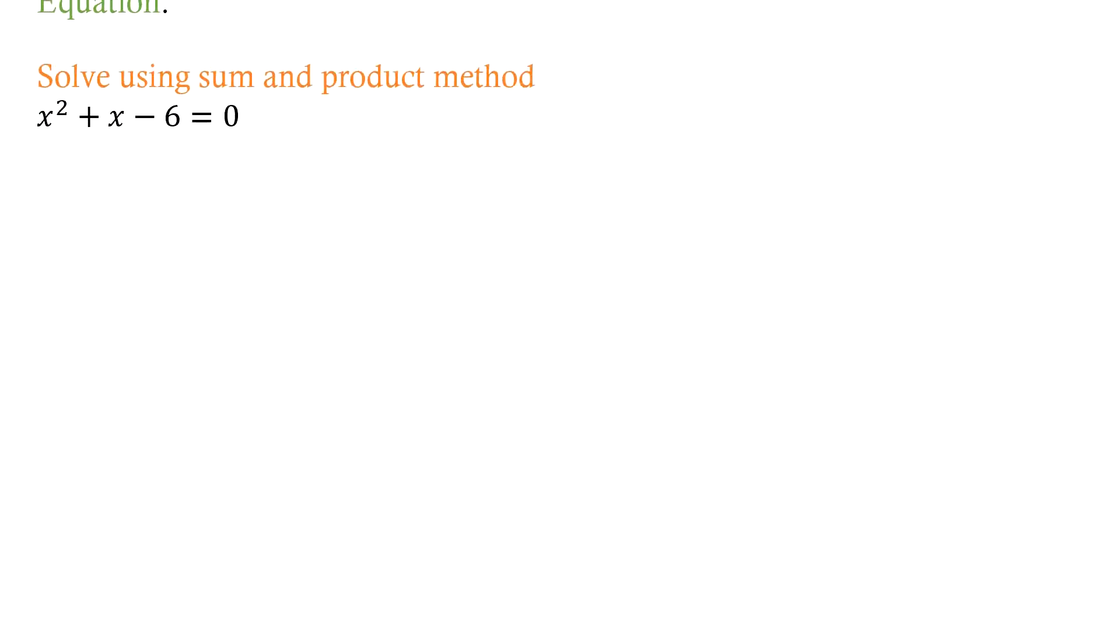The first thing we're going to look at is solving using the sum and product method. These are really good for quick ones like mono quadratics where the coefficient for the first term, the highest term, is one. You can solve other ones but it's easiest for one.